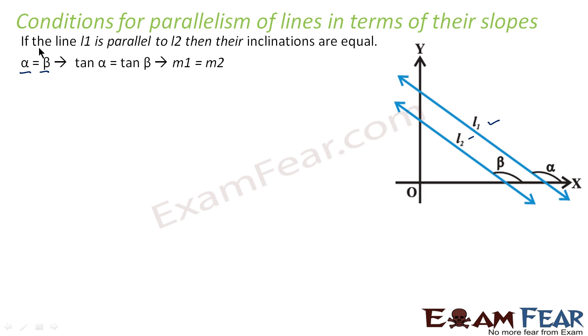So in that case, we'll say α is equal to β. If α is equal to β, we can also say tan α equals tan β. If tan α equals tan β, we can also say M1 equals M2. Why? Because tan θ is nothing but slope. So we can say that if slopes of two lines are same, that means these two lines are parallel.